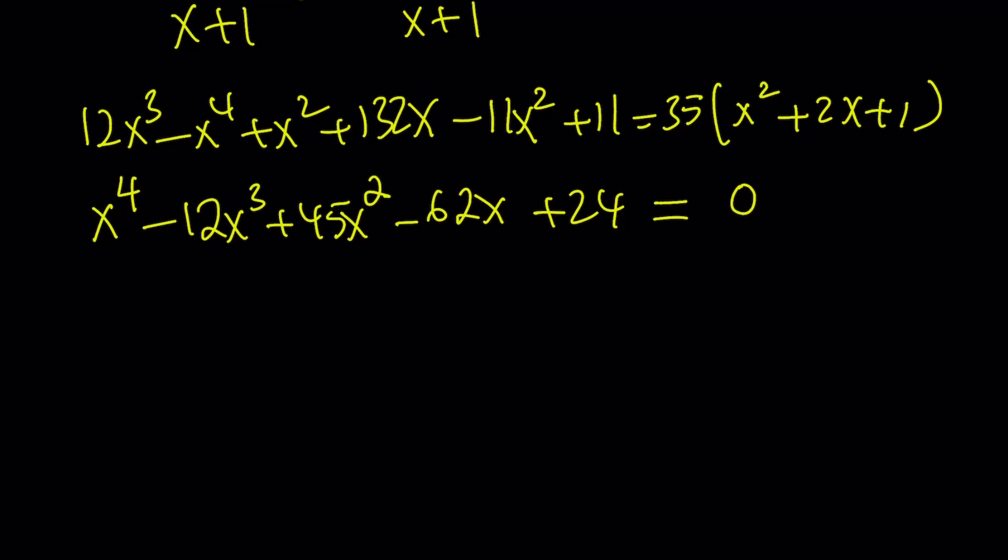Possible roots are divisors of 24. And after trial and error, you're going to get that one of the roots is a 2 and the other one is a 3. So here's what we get from here.